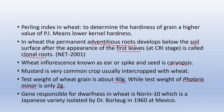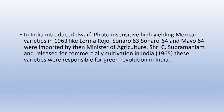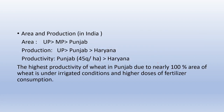The gene responsible for dwarfness in wheat is Norin 10, a Japanese variety isolated by Dr. Borlaug in 1960 in Mexico. In India, dwarf photo-insensitive high-yielding Mexican varieties were introduced in 1963, like Lerma Rojo, Sonora 63, Sonora 64, and Mayo 64. They were imported by Minister of Agriculture Shri C. Subramaniam and released for commercial cultivation in India in 1965. These varieties were responsible for the Green Revolution in India.